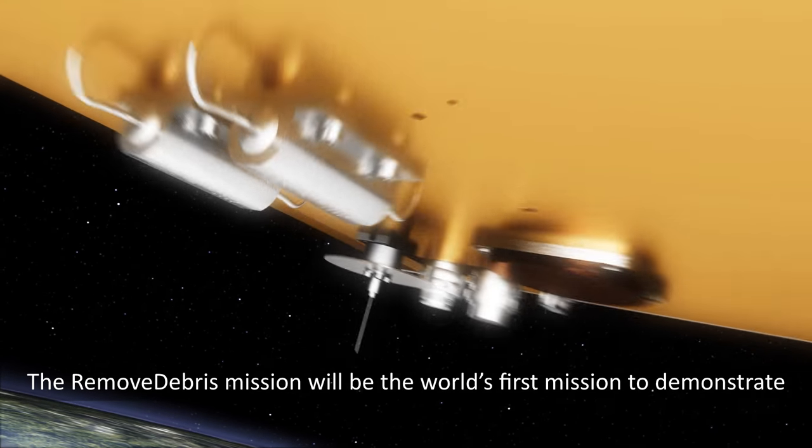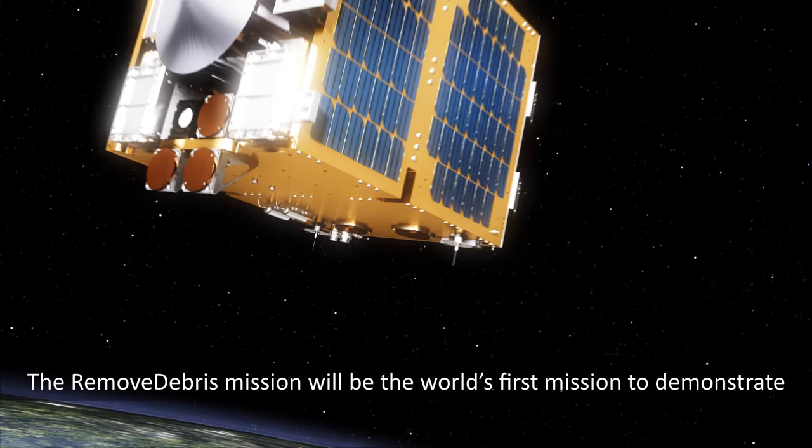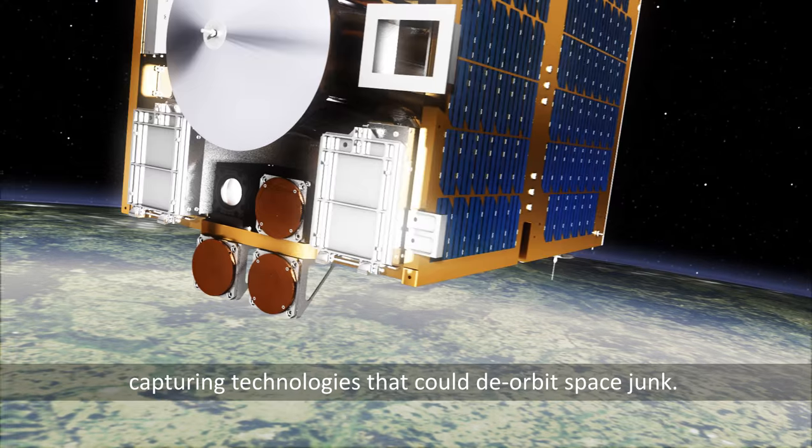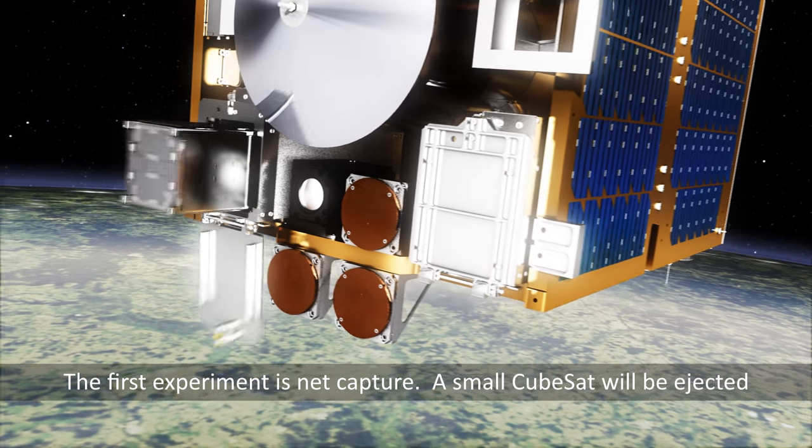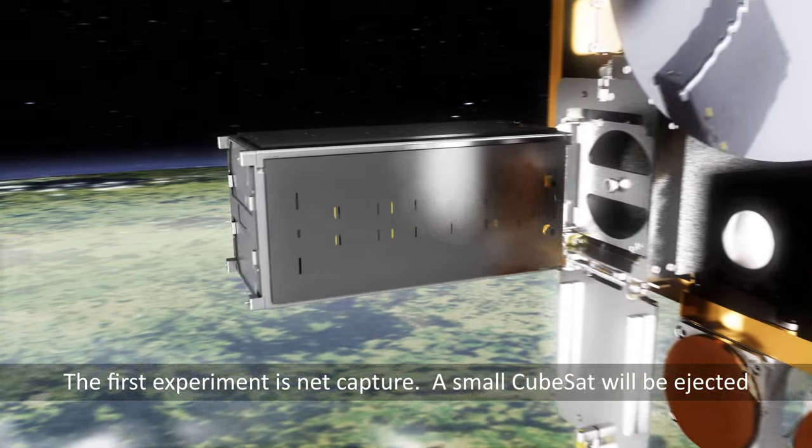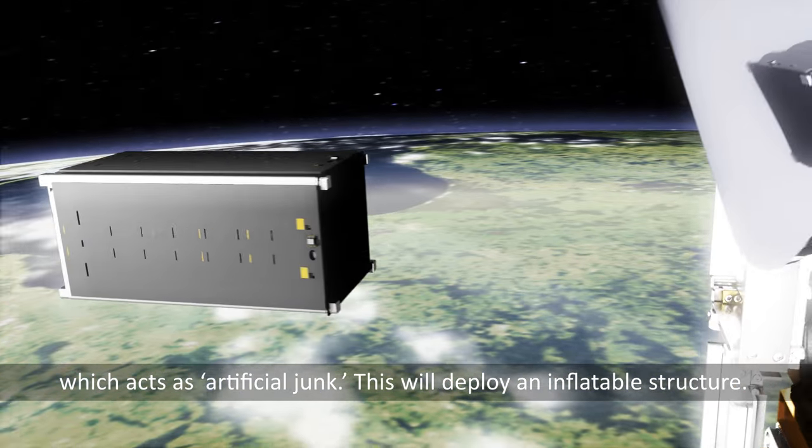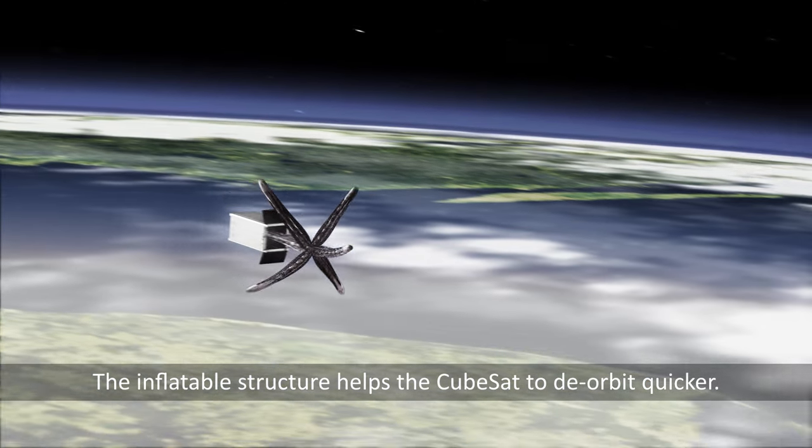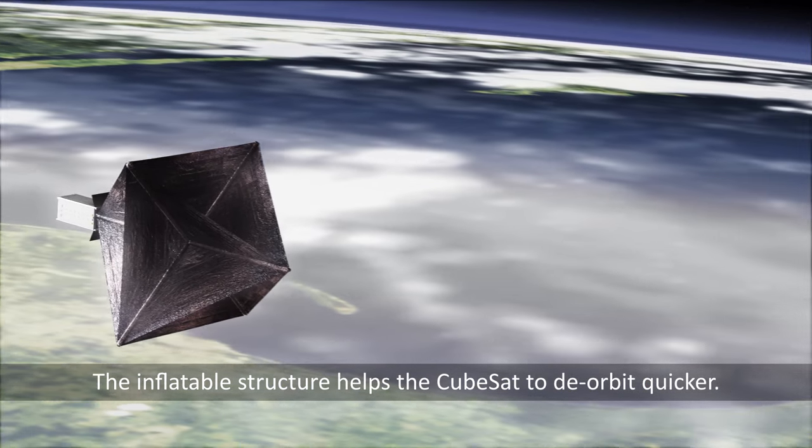The RemoveDebris mission will be the world's first mission to demonstrate capturing technologies that could deorbit space junk. The first experiment is net capture. A small CubeSat will be ejected, which acts as artificial junk. This will deploy an inflatable structure. The inflatable structure helps the CubeSat to deorbit quicker.